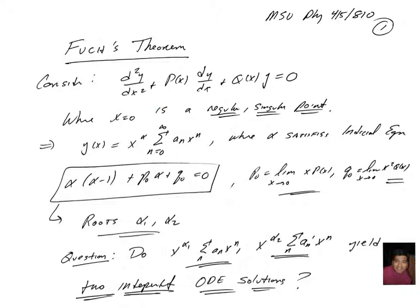We saw that we found an indicial equation. We looked for a solution in the form x to the alpha times a power series, and plugging into the equation, we saw that alpha had to solve this quadratic equation, the indicial equation, which in principle had two roots. P0 can be computed as the limit as x goes to 0 of x p of x, and q0 is the limit as x goes to 0 of x squared q of x.